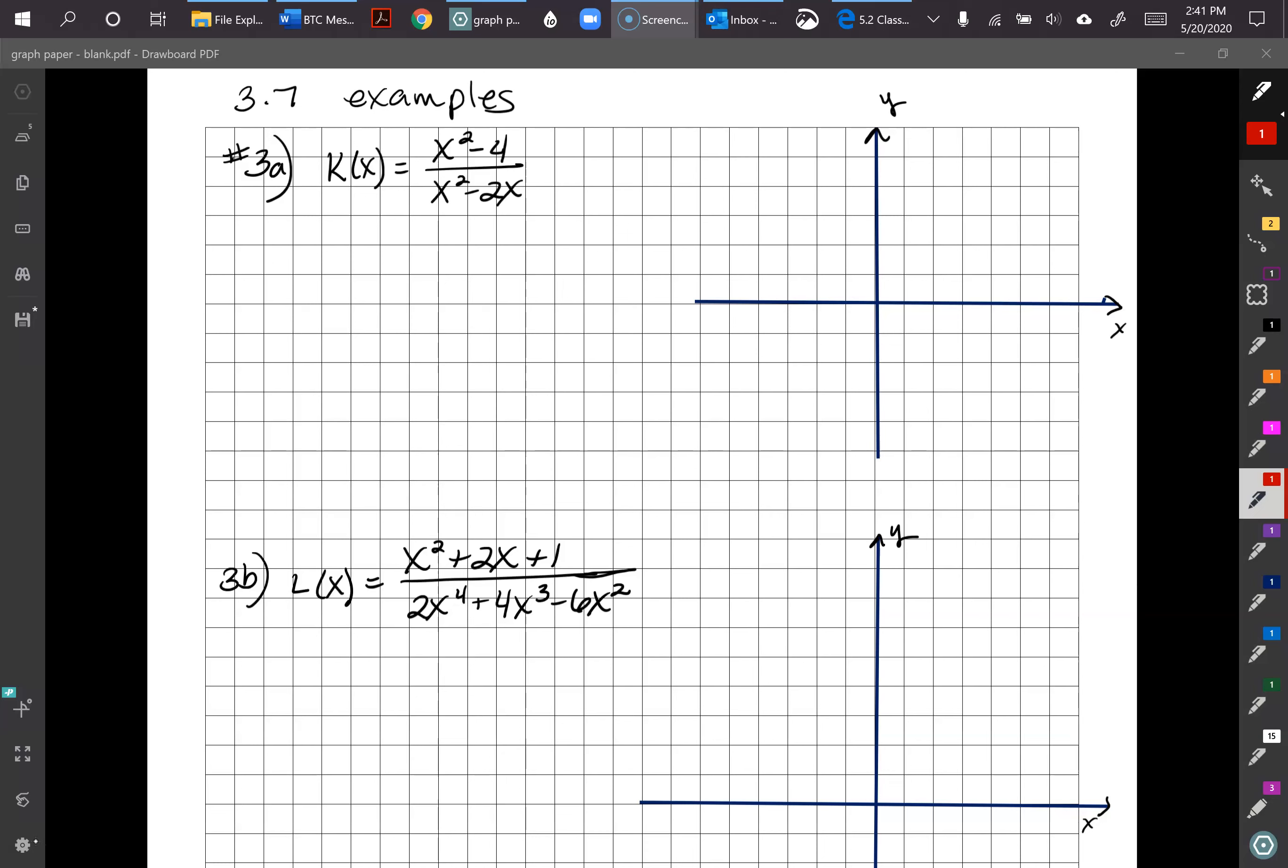This one's a little trickier though because we are going to have holes in all of these. So K(x) equals x squared minus 4 over x squared minus 2x. So we're going to factor these out. And we're going to have x plus 2 times x minus 2 over x times x minus 2. So right there you can see we have a hole. If we simplify that down, we would end up with x plus 2 over x.